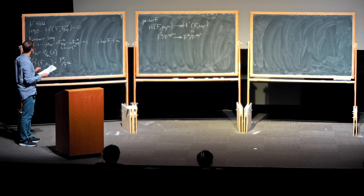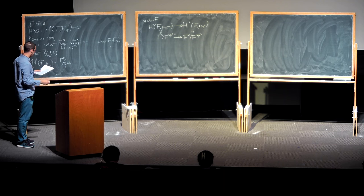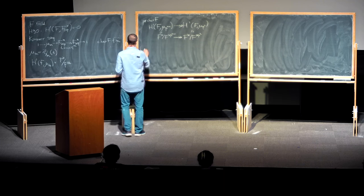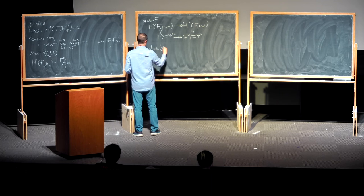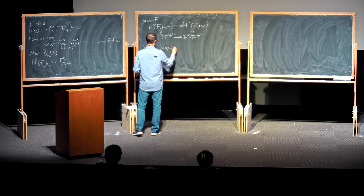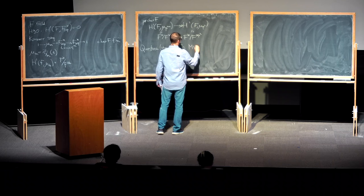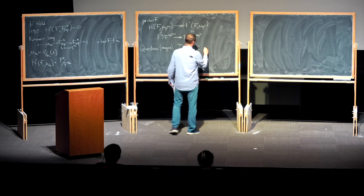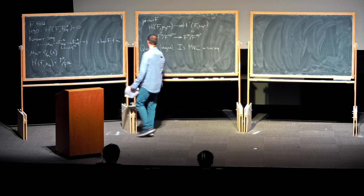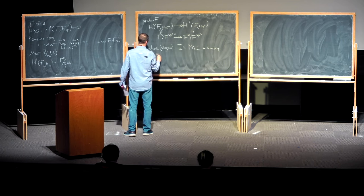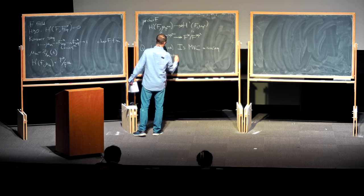So as a consequence of Hilbert 90 and Kummer's sequence, we always have a surjection there. This setup is called Kummer theory. The question that I want to address now — for now it's a vague question, but I will make it precise later — is: is the massive vanishing conjecture a consequence of Hilbert 90 or Kummer theory?